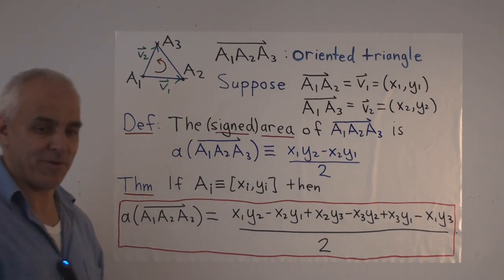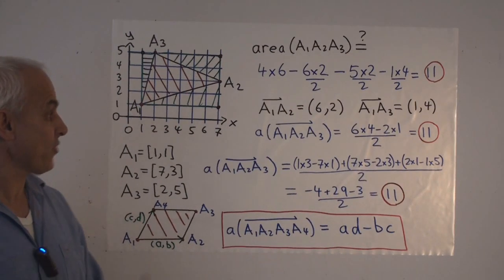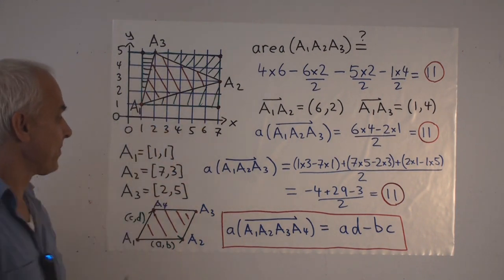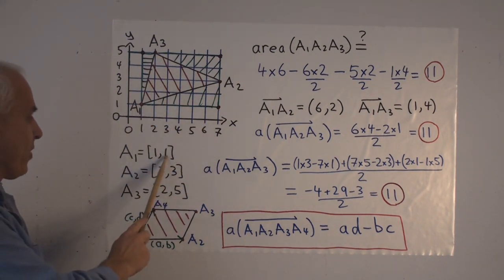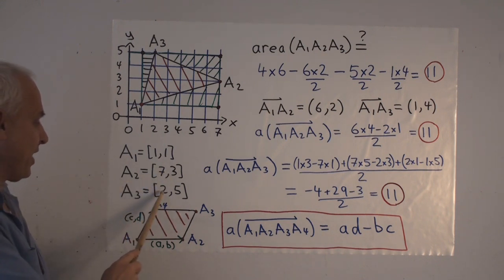Let's have a look at an example. So here is a triangle. A1, A2, A3. With points 1, 1, A1. A2 is 7, 3. A3 is 2, 5. And we would like to know what is the area of this triangle.